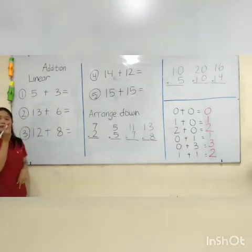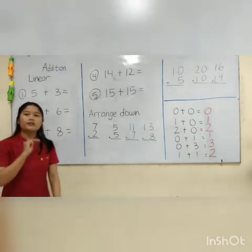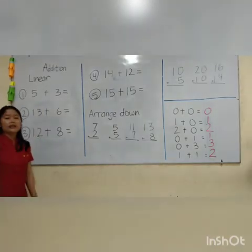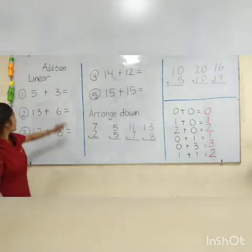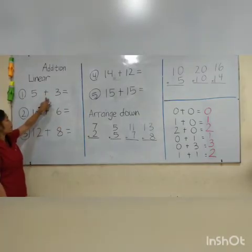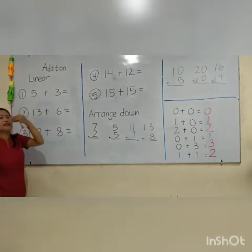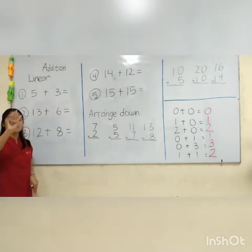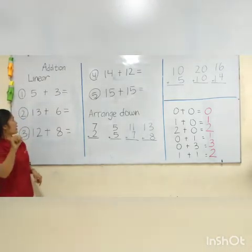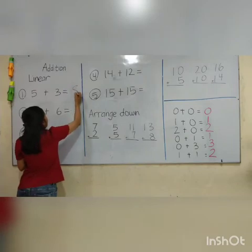Keep 5 inside my mouth, open 3 fingers. Because this is addition, don't forget to say 'after.' So: 5 keep inside my mouth, open 3 fingers, after 5: 6, 7, 8. The answer will be 8. Let's write down 8.